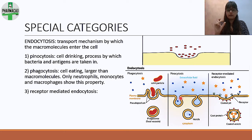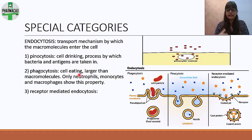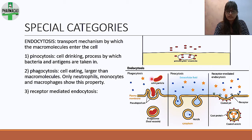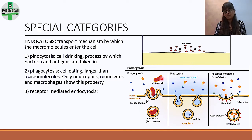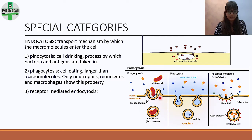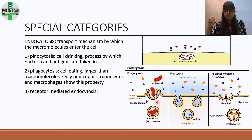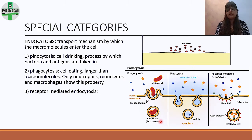Phagocytosis is 'cell eating.' Just as you can drink a juice but must eat a fruit, phagocytosis handles larger solid particles. Only neutrophils, monocytes, and macrophages show this property — not all cells. The cell membrane wraps around the bacterium, covers it completely, then pinches off to form a phagosome.